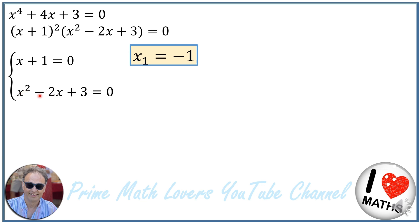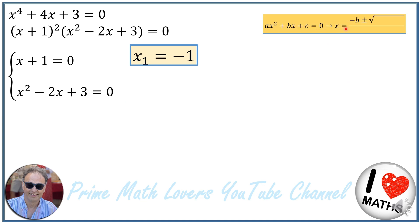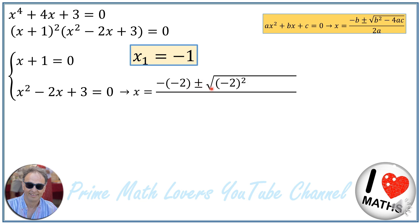For x squared minus 2x plus 3 equal to 0, the formula for solving the quadratic equation ax squared plus bx plus c equals 0 is x equals minus b plus or minus square root of b squared minus 4ac over 2a. In our equation, a is 1, b is negative 2, and c is positive 3, so x will be minus (negative 2) plus or minus square root of (negative 2) to the power of 2 minus 4 times 1 times 3, over 2 times 1.